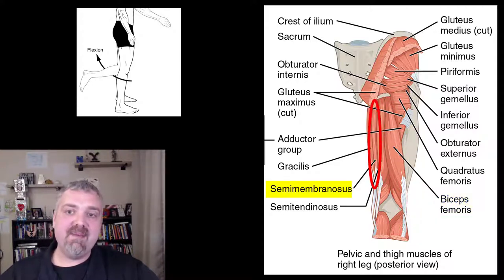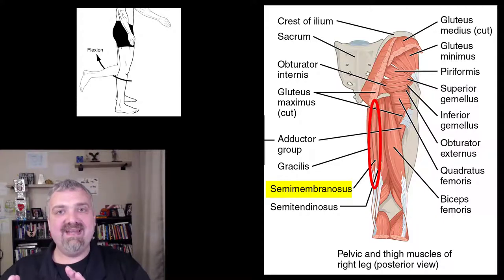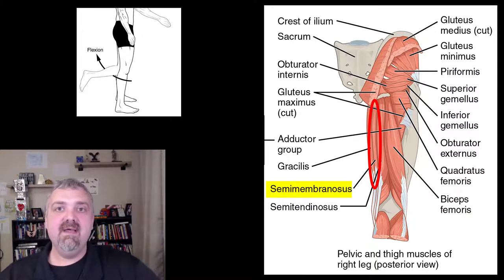Semimembranosus is called that because it has a nice big flat membranous tendon or insertion point there underneath the other muscles, but you can't see that. And then that also involved in flexion of the knee.